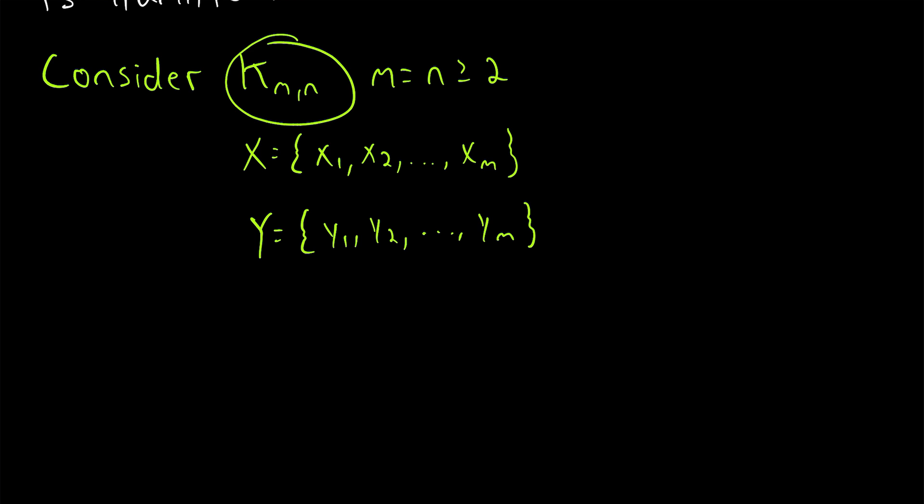Now we just need to prove that this graph is Hamiltonian, so we just need to show it has a Hamiltonian cycle. It's quite easy to see that we could construct a Hamiltonian cycle by going from x_1 to y_1 to x_2 to y_2 and so on until we get to x_m, then go to y_m, and then return to x_1. That would be a cycle containing all vertices of the graph. Since it's a complete bipartite graph, there is an edge joining every pair of vertices that are in different partite sets. So we know this is a Hamiltonian cycle, so the graph is Hamiltonian.